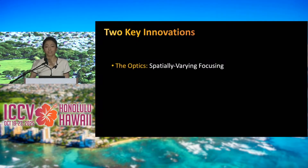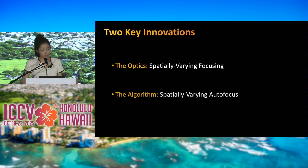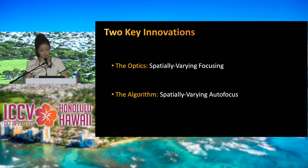Achieving this requires two key innovations: a new computational lens that offers a camera spatially varying focusing capabilities, and the autofocusing algorithms that we use to drive our lens.